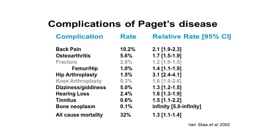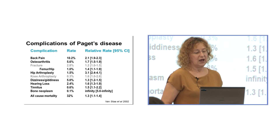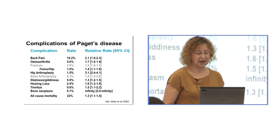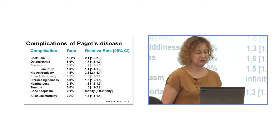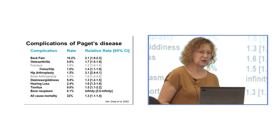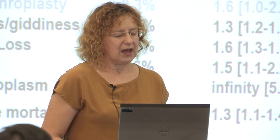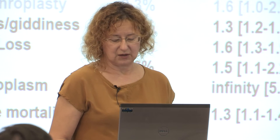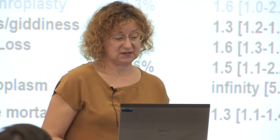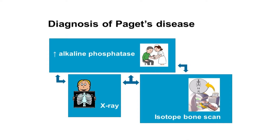Here is an X-ray of a Paget's skull with typical features — we call them cotton wool features — with a very much expanded and sclerotic bone, which you can compare to a normal X-ray. The difference is striking. There are a number of complications that can develop with Paget's disease, including back pain, osteoarthritis, hip fractures, hip arthroplasty, hearing problems, and an increased risk of bone malignancy. Fortunately, bone malignancy is extremely rare at less than 0.1%.